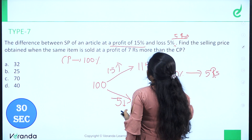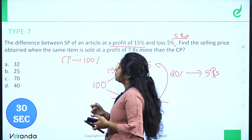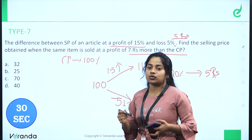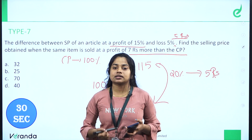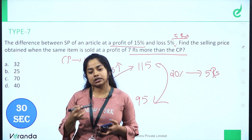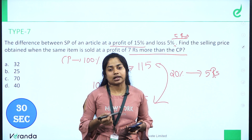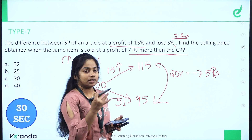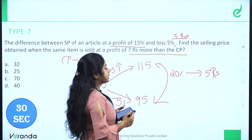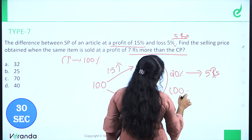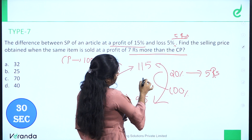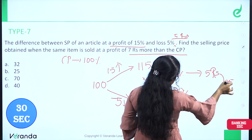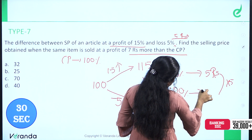What is the Selling Price obtained when the same item is sold at a profit of 7 rupees more than the Cost Price? If we add 7 rupees to the Cost Price, 20% of the value works out to about 5 rupees, so the Cost Price is about 25 rupees.